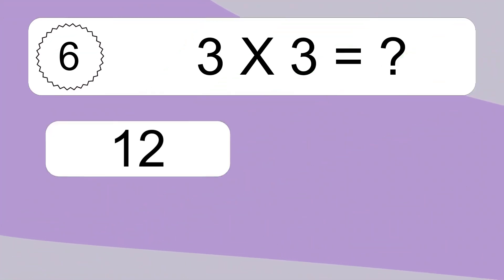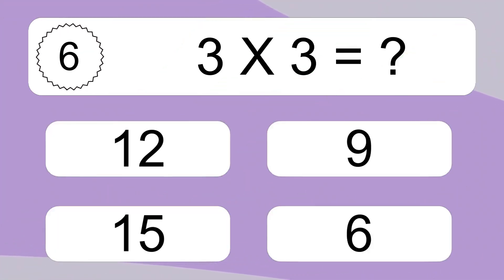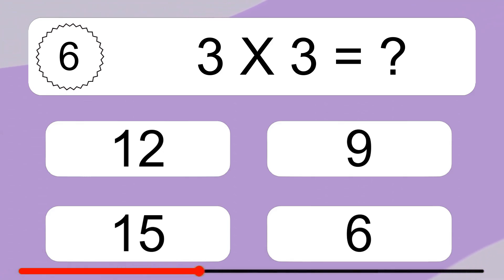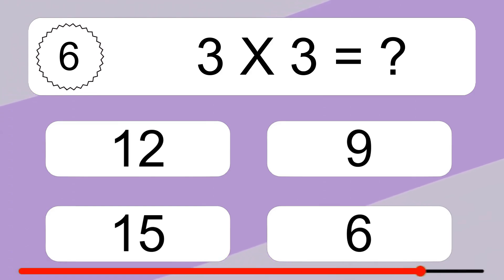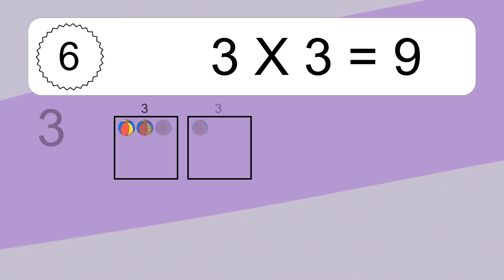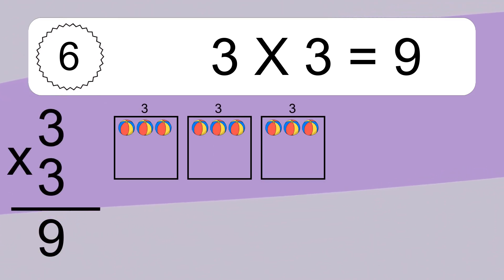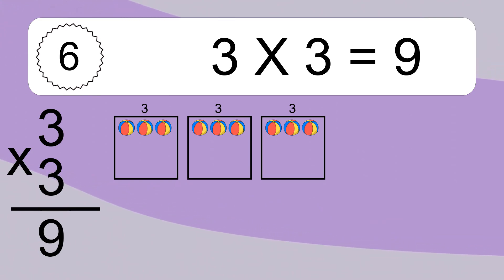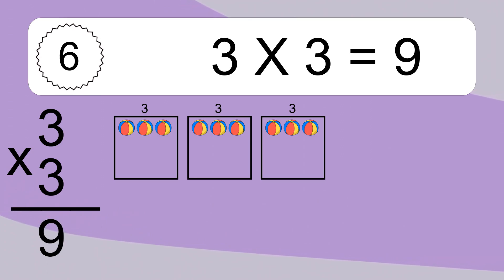3 times 3 equals what? 3 times 3 equals 9. We have 3 boxes, and each box has 3 colorful balls inside. If you count all the balls in all the boxes together, you will have 3 times 3 balls. This equals 9 balls.